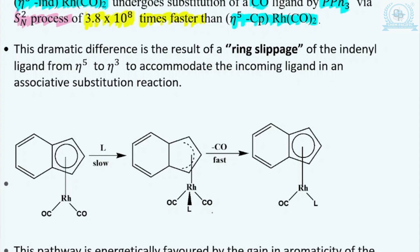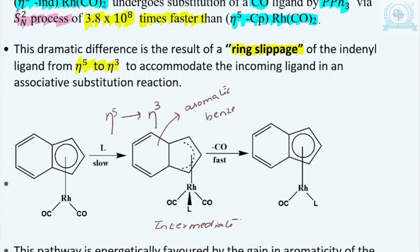This is happening because when substitution starts, ring slippage of the Indenyl occurs from η5 to η3 mode. The transition from η5 to η3 mode of the intermediate is clearly visible. Even though the transition is taking place, it is not at the cost of the loss of aromaticity. Due to the aromatic benzene ring, its aromaticity remains intact, and because of this intact aromaticity it results in the formation of a sufficiently stable intermediate.